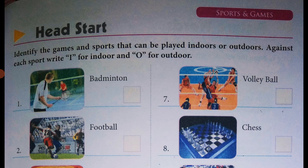Against each sport, write 'I' for indoor and 'O' for outdoor. Piyari Bachcho, this page has sports games with pictures and the game name. For games played outdoors, write O in the box; for indoor games, write I in the box.